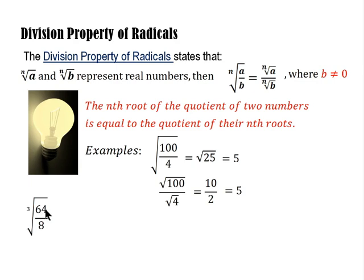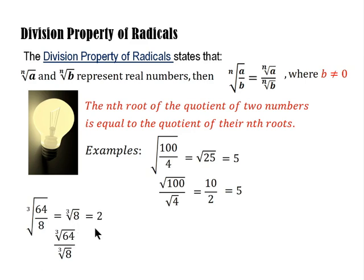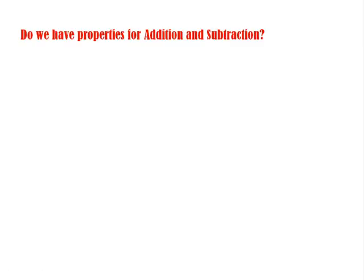Another example: the cube root of (64/8). Does it equal the cube root of 64 over the cube root of 8? On the left, 64/8 = 8, and the cube root of 8 is 2. On the right, the cube root of 64 is 4 and the cube root of 8 is 2, so 4/2 = 2. Both sides equal 2, so this is correct.